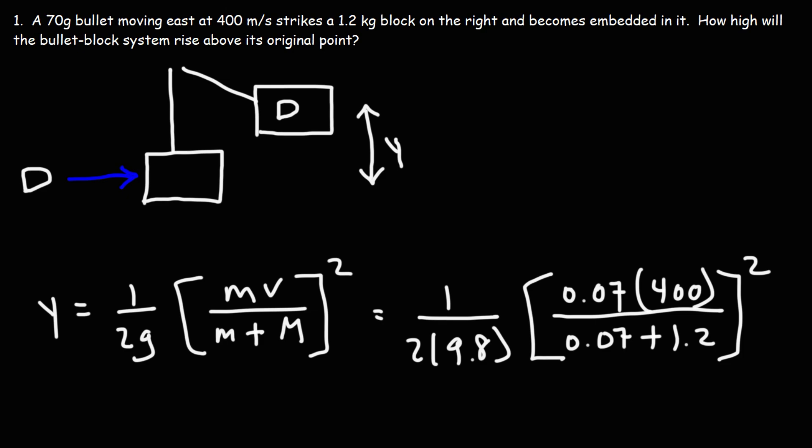So I'm going to do this one step at a time. First, I'm going to multiply 400 by 0.07, and then I'm going to divide that by 1.27. So that's 22.0472. Then I'm going to square it, which is 486, and then divide it by 2 times 9.8, which is 19.6. So this will give you a height of 24.8 meters.